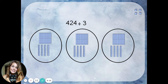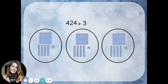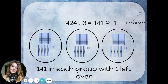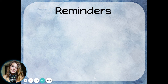Now I'm going to divide up my tens. I had 12 tens, so I can give each group 4 of them to keep it even. Now I just have to divide the ones — one for each group. I seem to have an extra one, and that is my remainder. This problem has a remainder. I have 141 in each group with one left over, so 424 divided by 3 is 141 remainder 1.